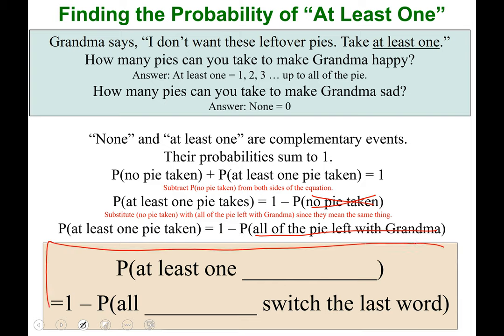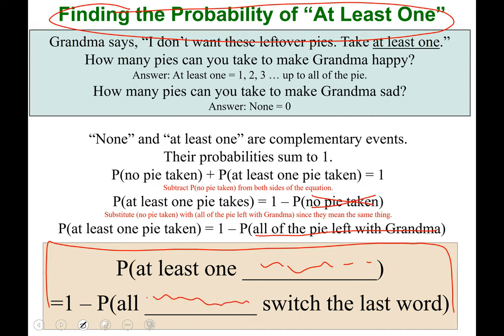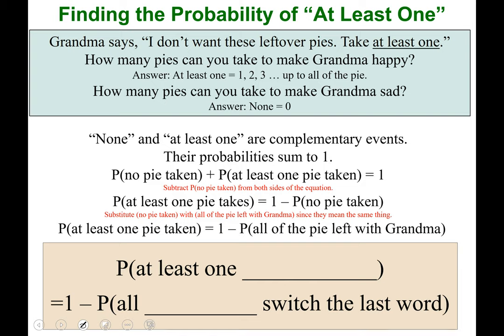What I've shown is the derivation of this equation — the blank template you'll use whenever you read a question that says 'find the probability of at least one.' You set up the blank template: P(at least one [blank]) = 1 − P(all [same wording but switch the last word]). We did that with grandma's pies, switching from 'taken' to 'left.' You'll see this through examples coming up.